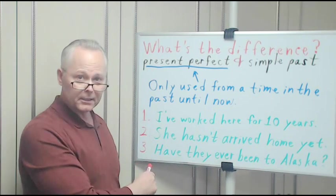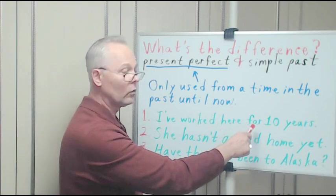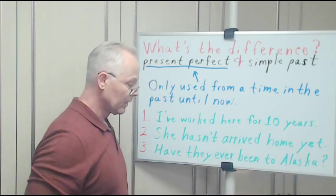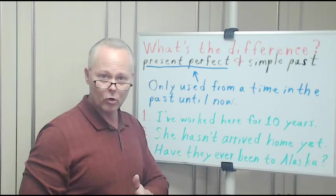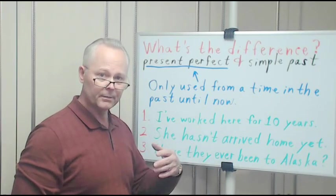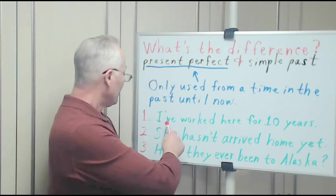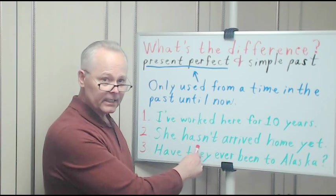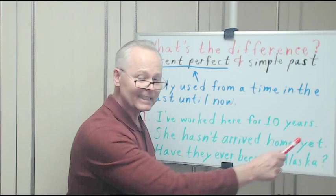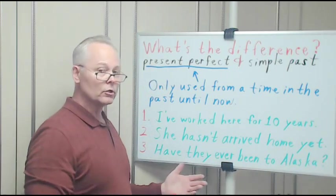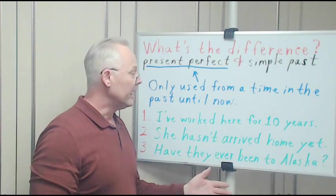What do we mean by that? Well, one, two, three sentences. Number one: I've worked here for ten years. We're talking about in the past up until today, now, at this moment. That's what's happened in the past, not the future. Number two: She hasn't arrived home yet. She has not—she hasn't—arrived home yet.